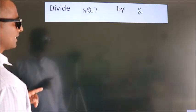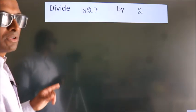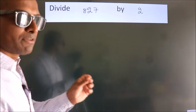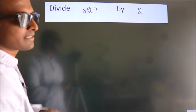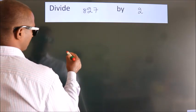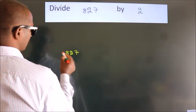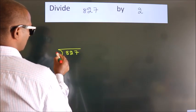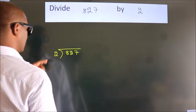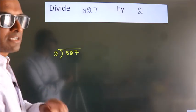Divide 827 by 2. To do this division, we should frame it in this way. 827 here, 2 here. This is your step 1.